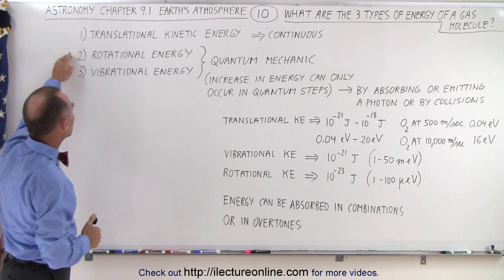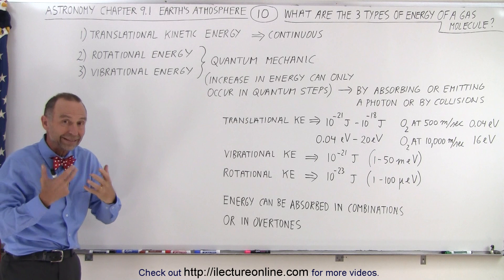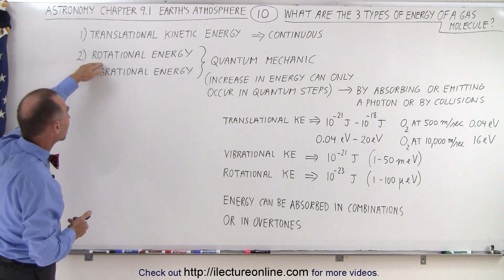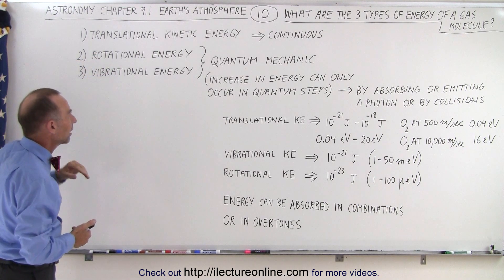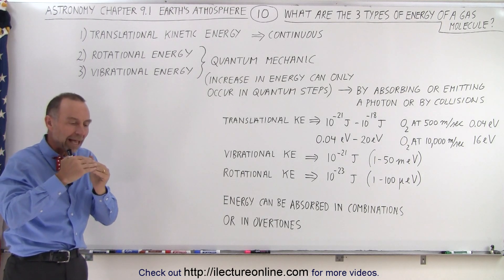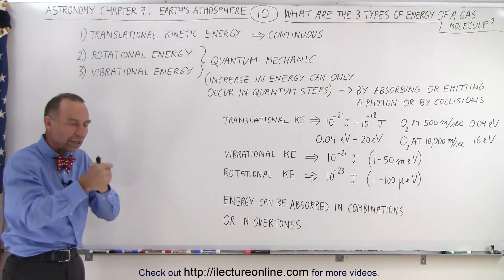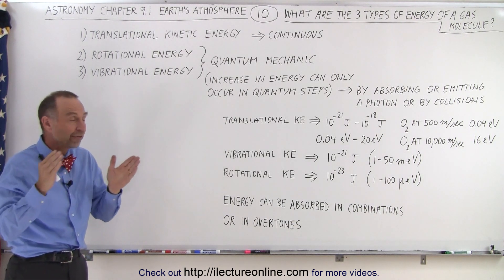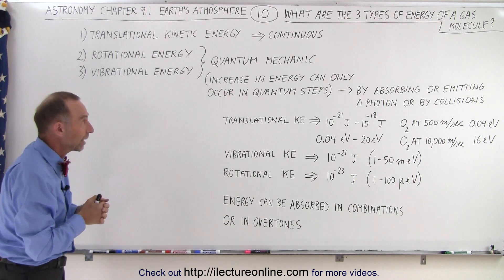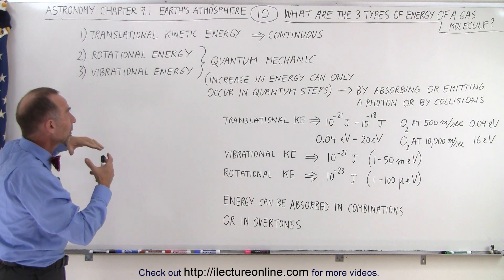The other two types of energy that a gas molecule can obtain or retain in the atmosphere is rotational kinetic energy and vibrational kinetic energy. Now those two types are quantized. You can only have certain quantized settings, certain quantized rotations or certain quantized vibrations like we learned in an oscillator when we do quantum mechanics.